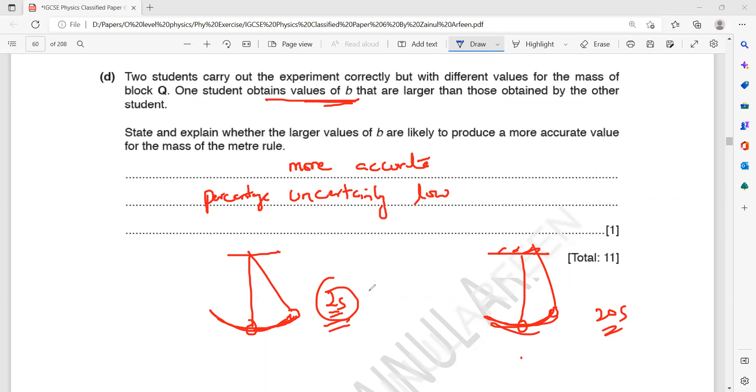So when you are measuring a small value, the percentage uncertainty is high. When you measure a large value, the percentage uncertainty is low. This one likely you make an error, this one less likely error is there. Errors are there, but the percentage error will be less or reduced. So this was question one from the balancing experiment.